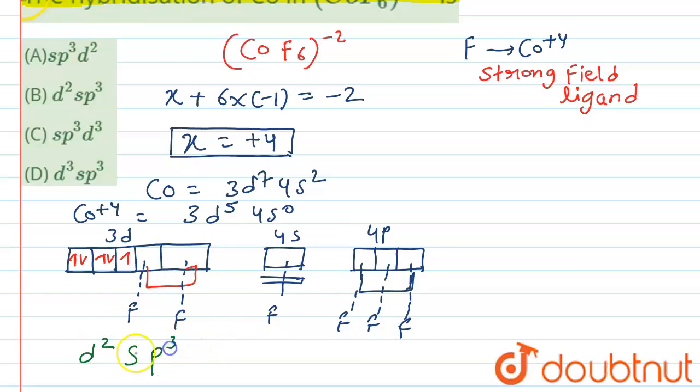So basically it leads to the hybridization of d2sp3. So the hybridization of CoF6 is nothing but d2sp3.